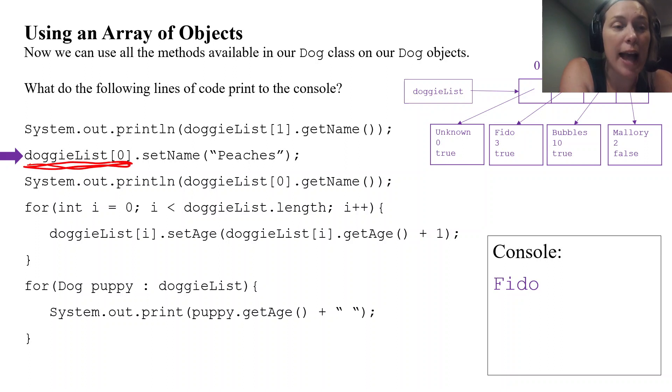Here's another example: doggieList[0].setName("Peaches"). The dog at the zero index sets their name to Peaches. Right now the dog at zero index has the name of Unknown, so we're going to get rid of that and set it equal to Peaches. Unknown gets tossed out; Peaches is now going to be stored there. So now when I go down to the next line and say, okay, the doggie at index zero, get their name and print it off—well, their name is Peaches now, so in the console Peaches would get printed off.